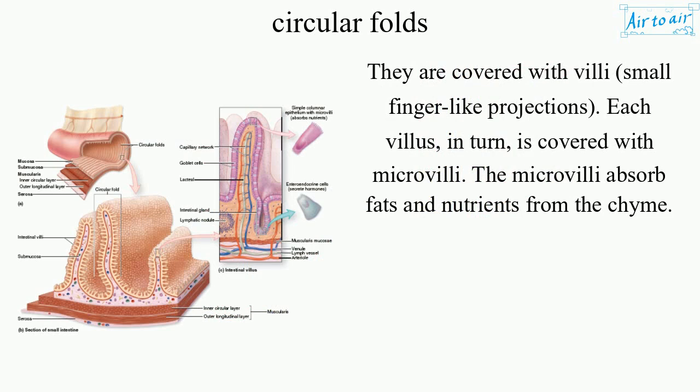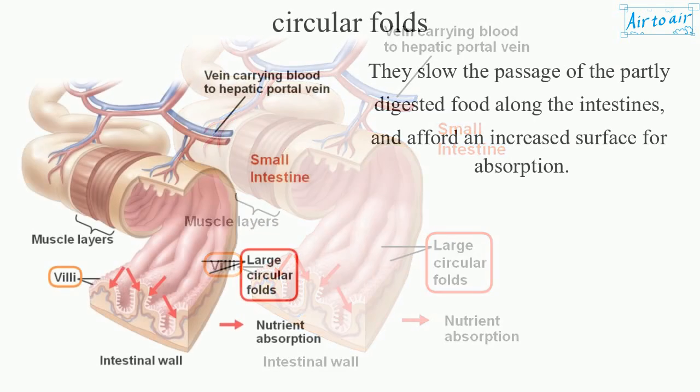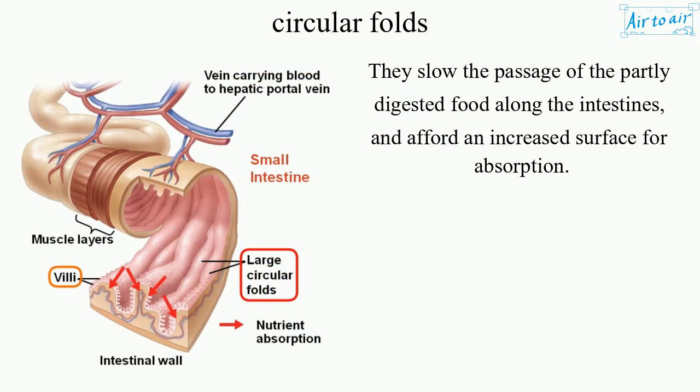Villi are small finger-like projections. Each villus, in turn, is covered with microvilli. The microvilli absorb fats and nutrients from the chyme. Circular folds slow the passage of partly digested food along the intestines and afford an increased surface area for absorption.